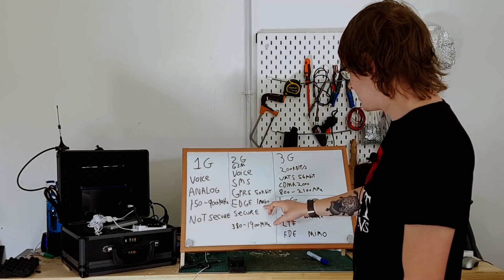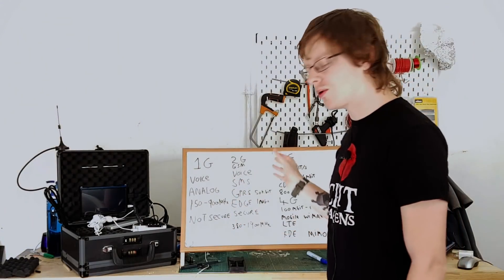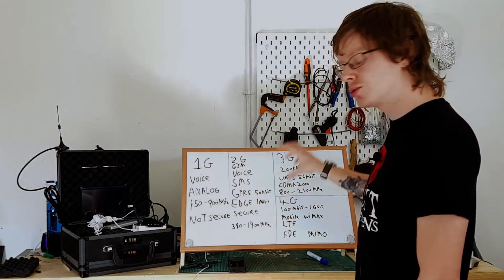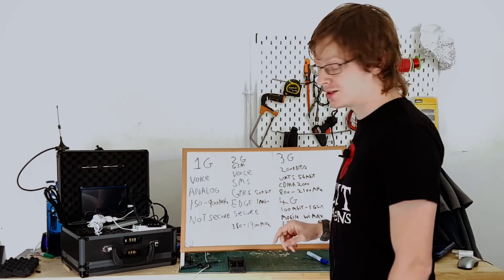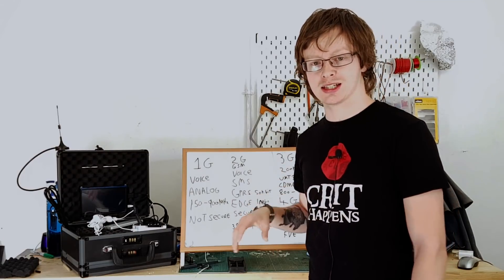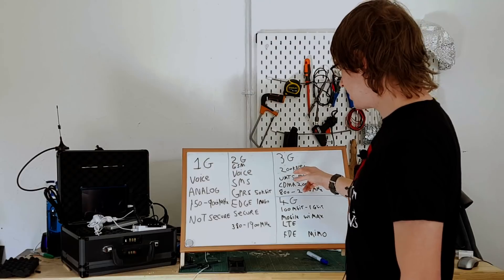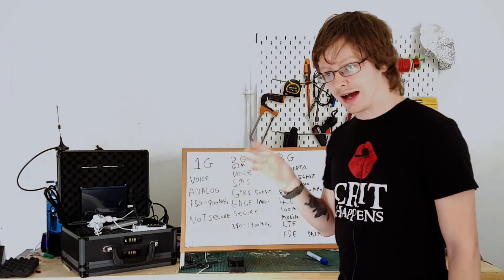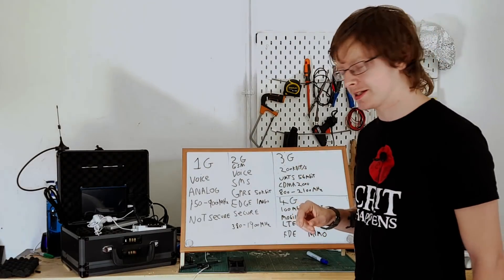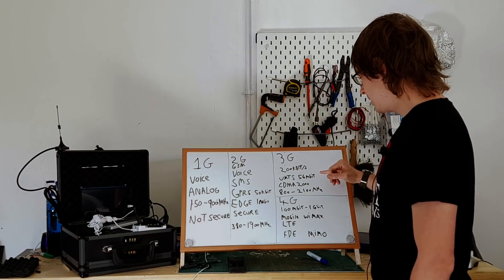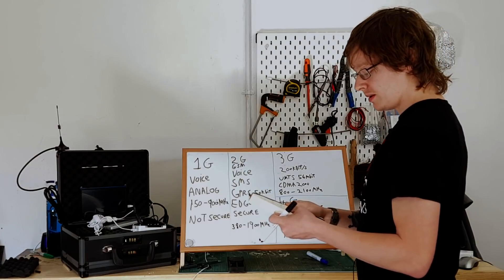Because even though EDGE had a theoretical one megabits per second, which is faster than the minimum requirement for 3G, EDGE was theoretical. Out in the wild you probably maybe got GPRS's full speed, about 50 kilobits per second, in and around, maybe a bit higher than that if you're really close to a repeater. With the 3G standard they said no, you must get minimum at any given time. If you're connected to 3G, your minimum speed must be 200 kilobits per second, and that was the key distinguishing feature.